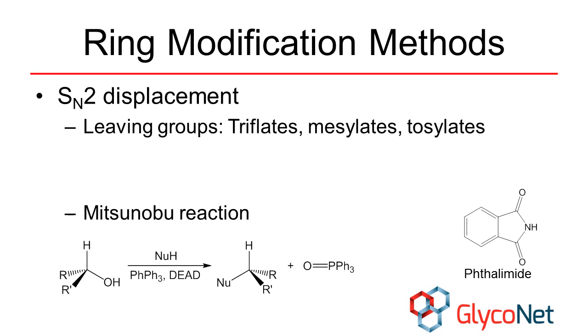The Mitsunobu reaction is another way of carrying out an SN2 displacement. This reaction works best at primary centers. If an amine is desired, phthalimide is a particularly good nucleophile to use in this reaction.